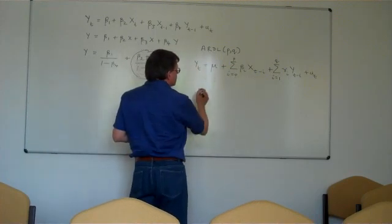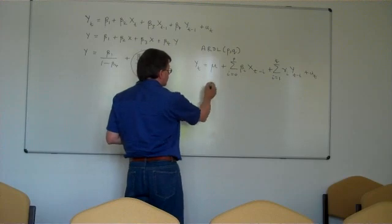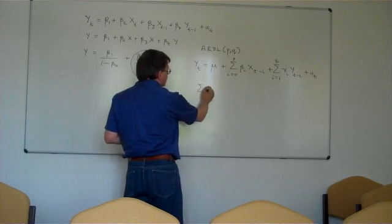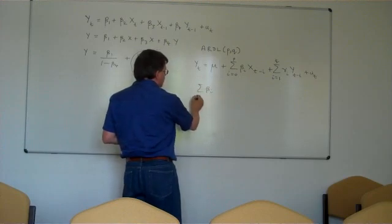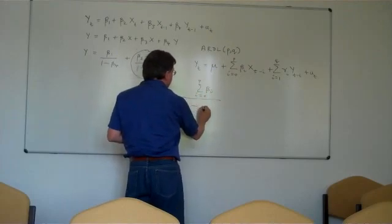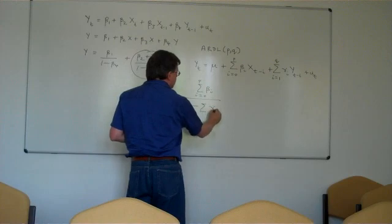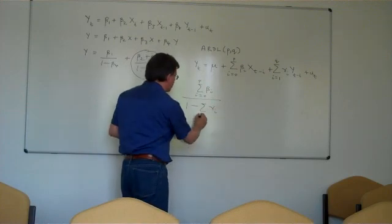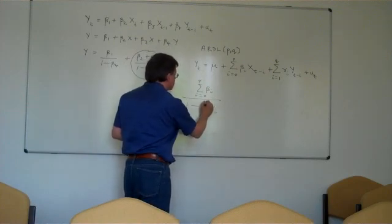And in this case we will get out a long-run multiplier which will be the sum of the beta i's from i equals 0 to p divided by 1 minus the sum of the gamma i's from i equals 1 to q.